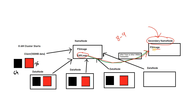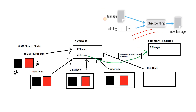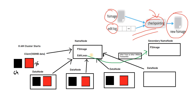As one hour is over at 9 am, the edit log present in the NameNode will go to the Secondary NameNode. The Secondary NameNode combines its existing fsimage with the incoming edit logs from the NameNode. This combining process is called checkpointing. In interviews, checkpointing is asked about — it is the process where the fsimage and edit logs are combined to create a new fsimage.